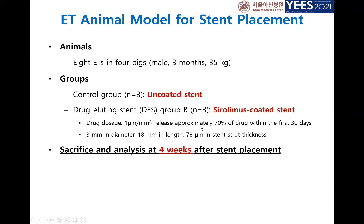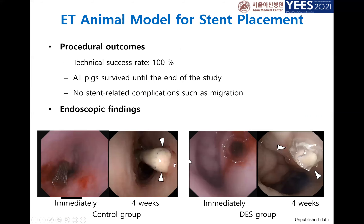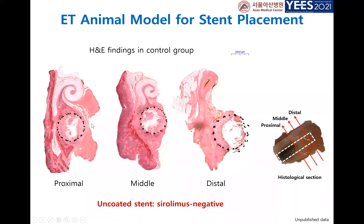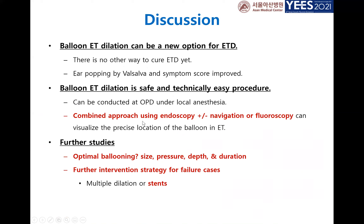We used uncoated stents and sirolimus-coated stents, and sacrificed pigs at four weeks after stent placement. The stent was successfully located, and we examined histology and could observe re-stenosis in the uncoated stent. We are currently evaluating specimens using the sirolimus-coated stent and expecting decreased granulation tissue formation.